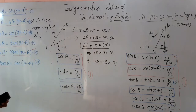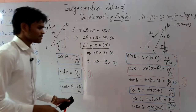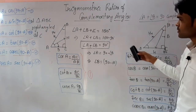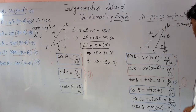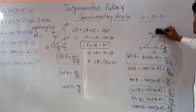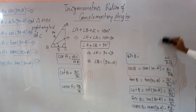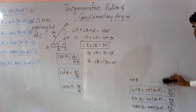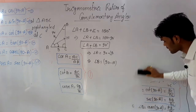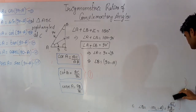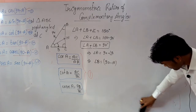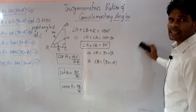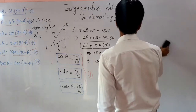For exercise 8.3 you need to learn these complementary angle formulas. Keep in mind: if the sum of two angles is 90° they are complementary; if 180° they are supplementary; if 360° they are complete angles.